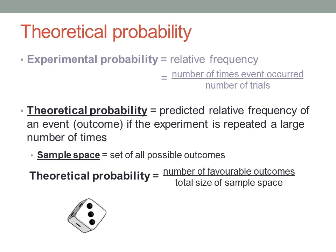So for that die rolling experiment, the theoretical probability of rolling, say, a three, should be the number of threes on the die, which is one, out of the total number of possible outcomes, which is six, one in six. That's 0.16 recurring.